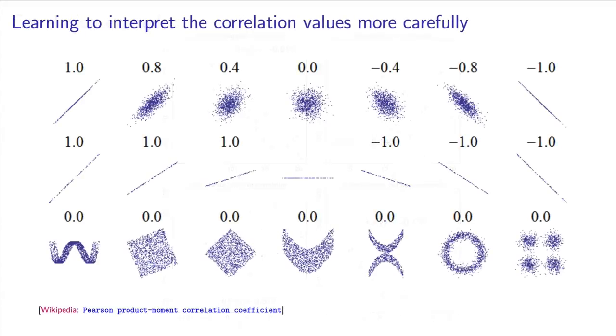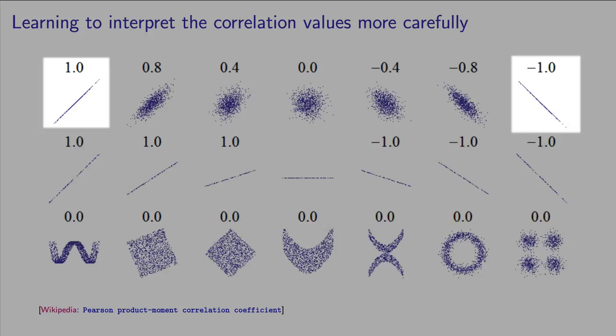This Wikipedia article illustrates the concept in a great way. Each of the small plots shows the correlation between a horizontal and a vertical variable on the scatter plot, but the axes are not shown. We can see the two extremes here in the first row. A variable that is 100% correlated with another variable looks like a straight line when plotted on a scatter plot and has a correlation of plus 1.